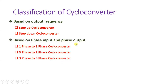Based on input phase and output phase, cycloconverters can be classified in three domains: one-phase input and one-phase output; three-phase input and one-phase output; or three-phase input and three-phase output. So based on input and output phases, we can classify them in three domains.